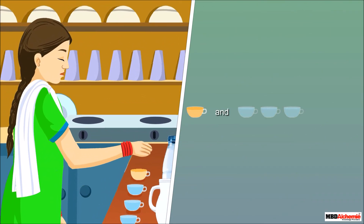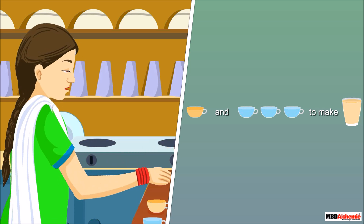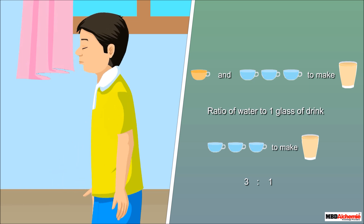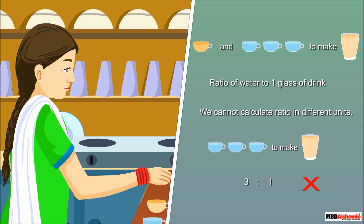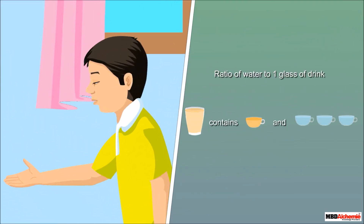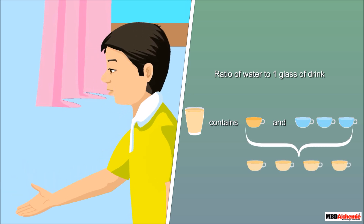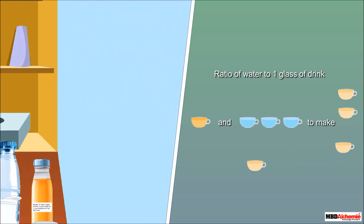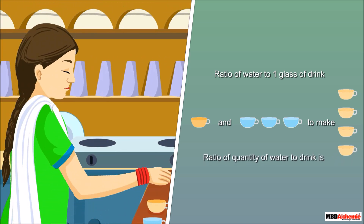We used squash and water in the ratio one is to three. Can you write the ratio of water to one glass of drink? I think it is three is to one. No! We can't calculate ratio in different units. The unit for water is three cups, so we must use the same unit for the drink. One glass of drink contains one cup of squash and three cups of water — that is four cups total. So the ratio of water to drink is three is to four.